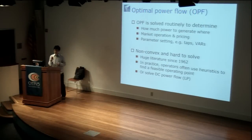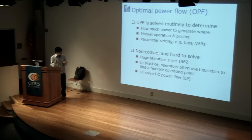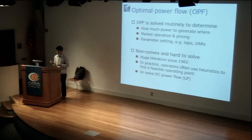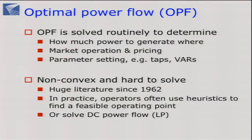In practice, what people do is solve a linearized version — they solve the linear program, which is easy, and use the nonlinear system to check feasibility. If it's not feasible, you tweak it and try again. If you get a feasible point, that's probably what you use, plus some human intelligence. That's essentially how it's done in practice.